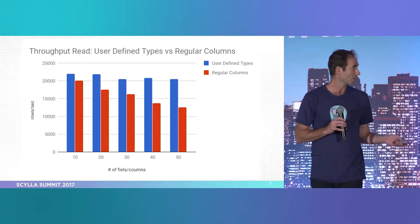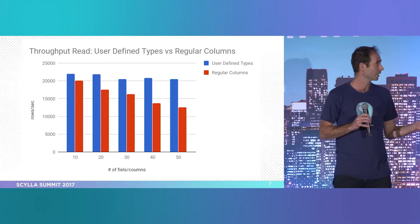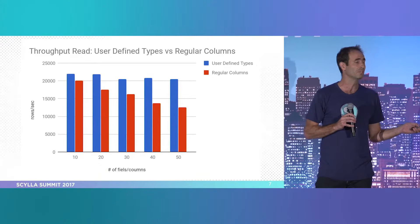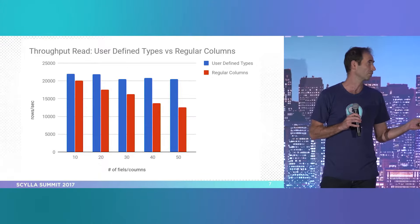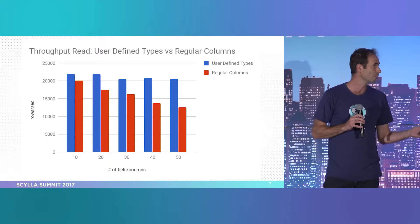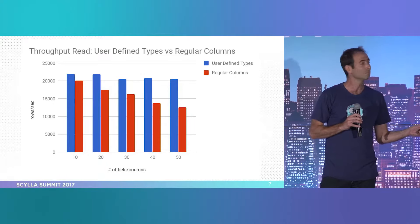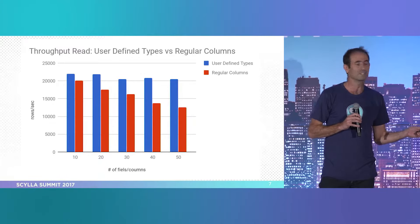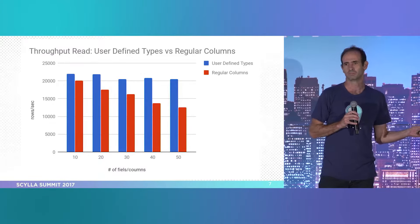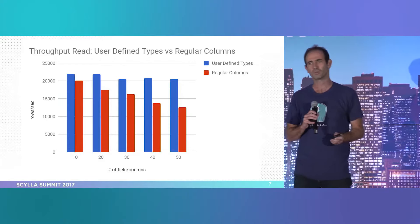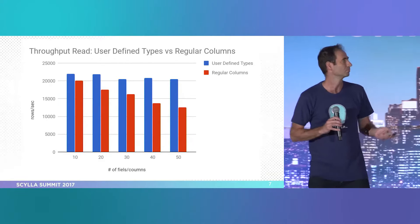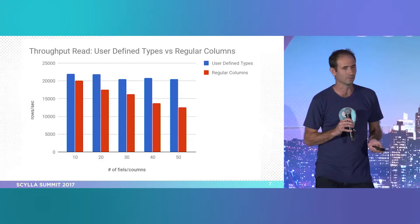When we're talking about reads, again, 10 columns versus 10 UDT fields is almost the same. But with 50 columns, reads are 75% better — same hardware, same everything, better throughput.